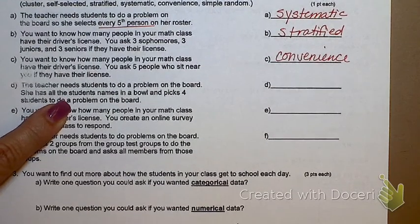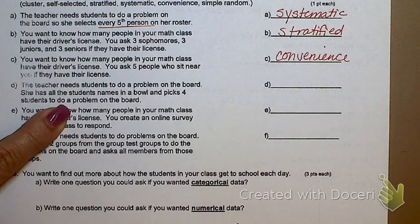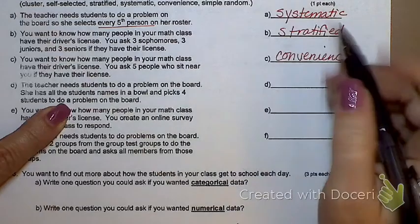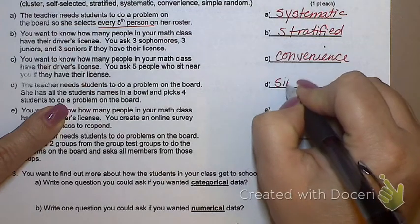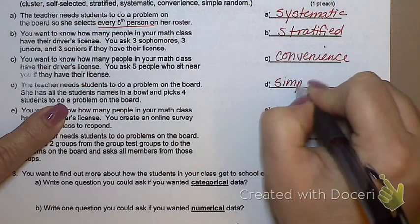The teacher needs students to do a problem on the board. She has all the students' names in a bowl and picks four students to do the problem on the board. What's that? Simple random. Randomly selecting numbers off a list, randomly picking names out of a hat. That's all simple random.